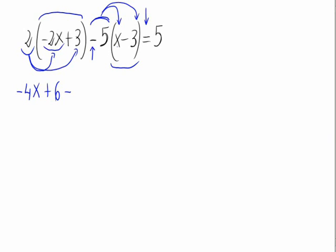Negative 5 times x which gives us negative 5x. In this case there is no need for the parenthesis and now negative 5 times negative 3. Negative negative positive, so 5 times 3 equals 15 equals 5.